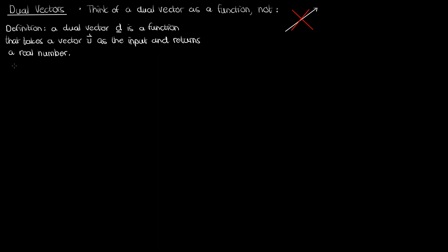I've denoted my dual vector d by underlining it, and my regular vector v by putting an arrow on top. In the next few videos I'm going to use this notation to help distinguish between a dual vector and a regular vector. The important condition for d to be a dual vector is that in addition to returning a real number, it has to be a linear function.